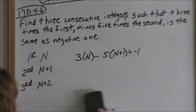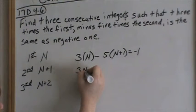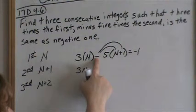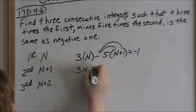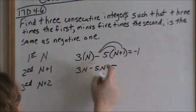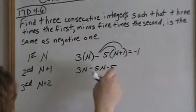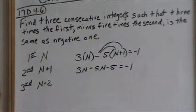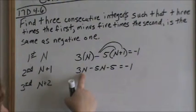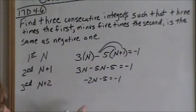This problem is good for keeping up with negatives. Three times n, we just say 3n. This negative five has to get distributed — do not forget to distribute that negative. Negative five times n is negative 5n. Negative five times positive one is negative five. That's a very common mistake — to lose that negative. This needs to be a negative right there, equal to negative one. Now this is just algebra: combining your n's and moving your whole numbers. 3n minus 5n is negative 2n, minus five equals negative one.